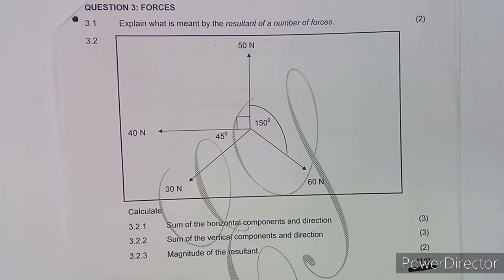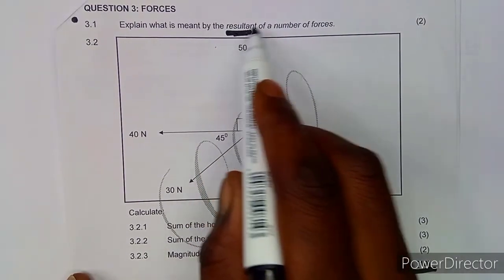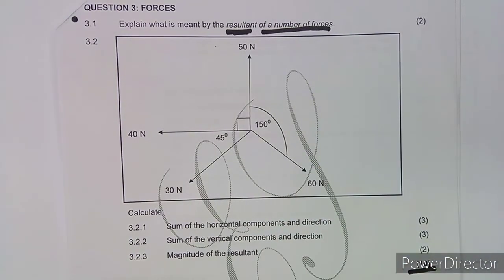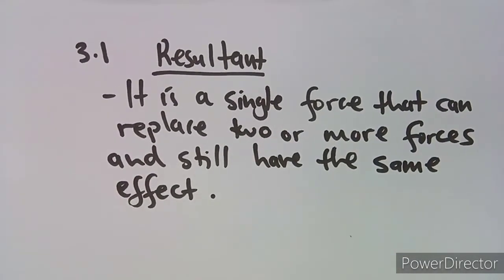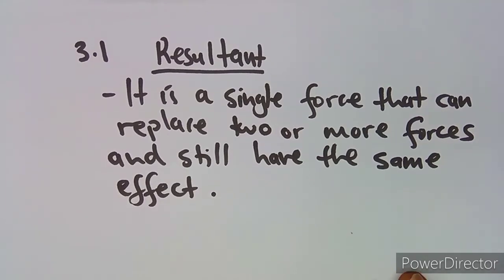The first question, 3.1, is to explain what is meant by the resultant of a number of forces. So if you are given a lot of forces and you want one single force to replace all of them, that is the resultant. We can define it as the single force that can replace two or more forces and still produce the same effect.